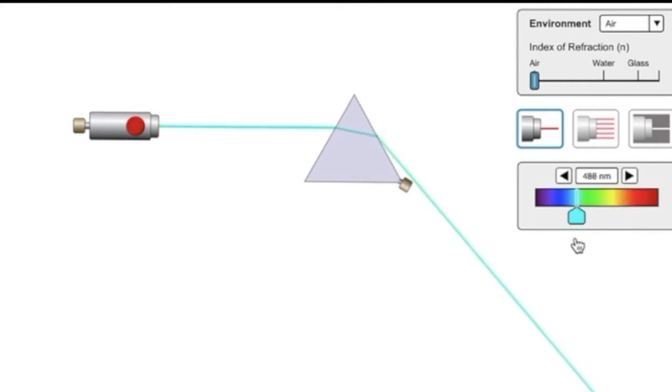So as it goes from red to yellow to green to blue and then to violet, you can see that the violet is refracted more than the red.